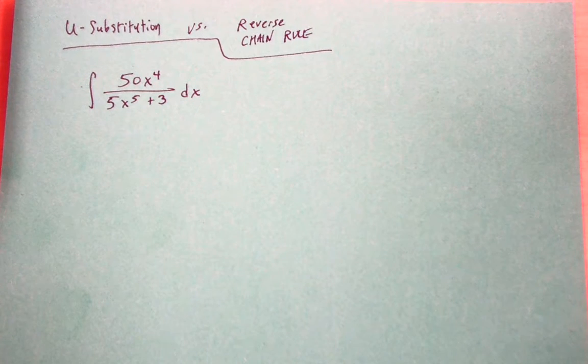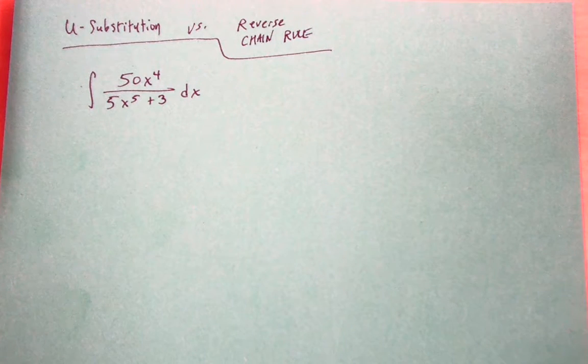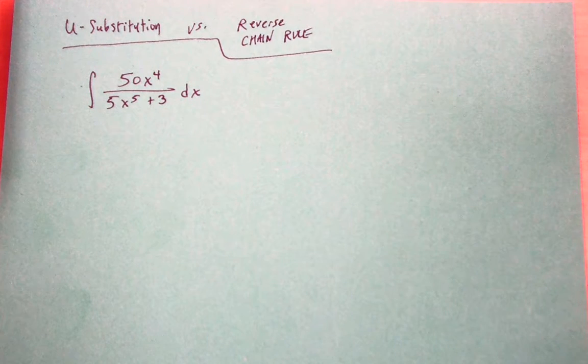You can essentially use the reverse chain rule only in certain situations whereas you can use u-substitution for everything the reverse chain rule would apply to, plus other situations.